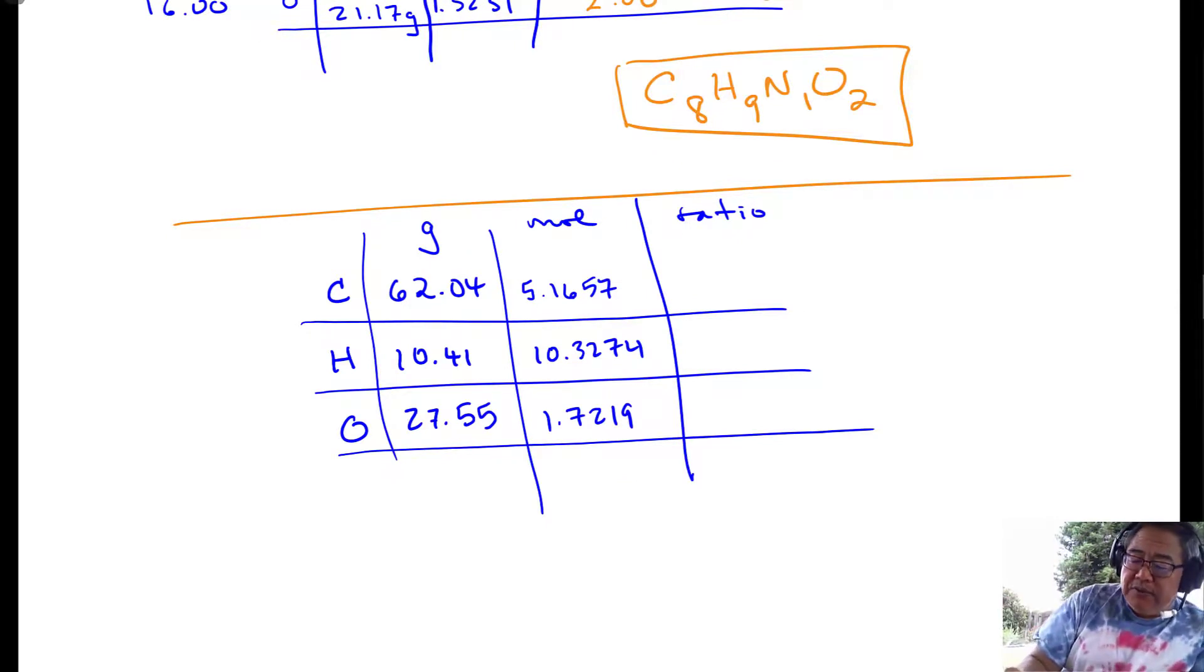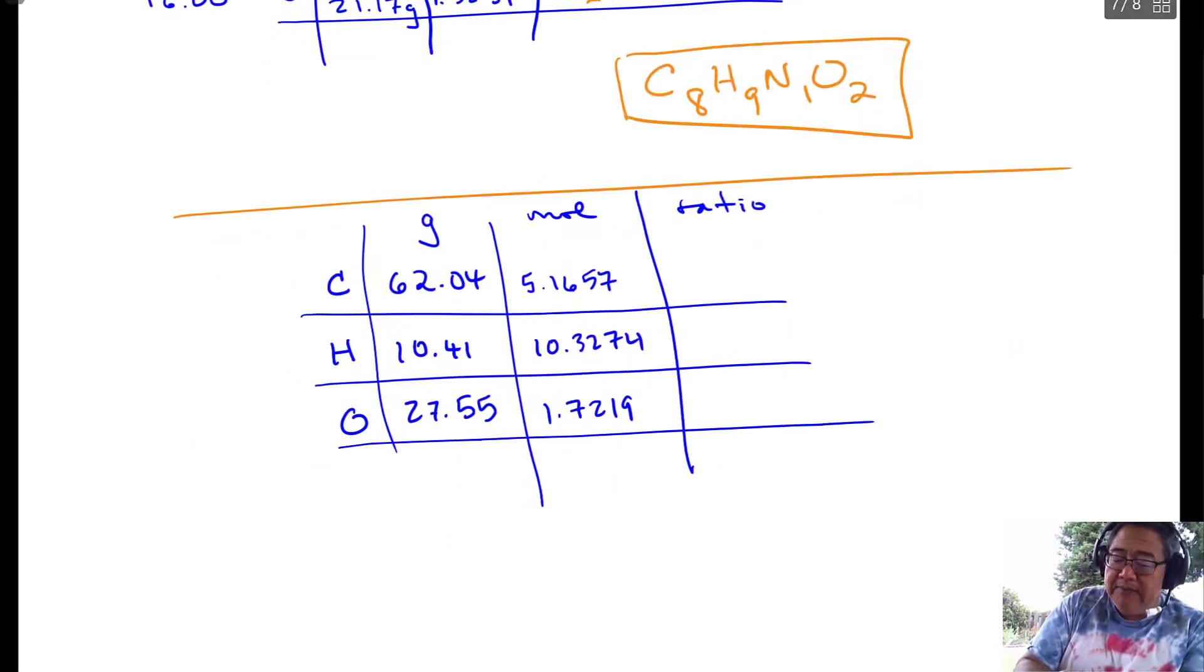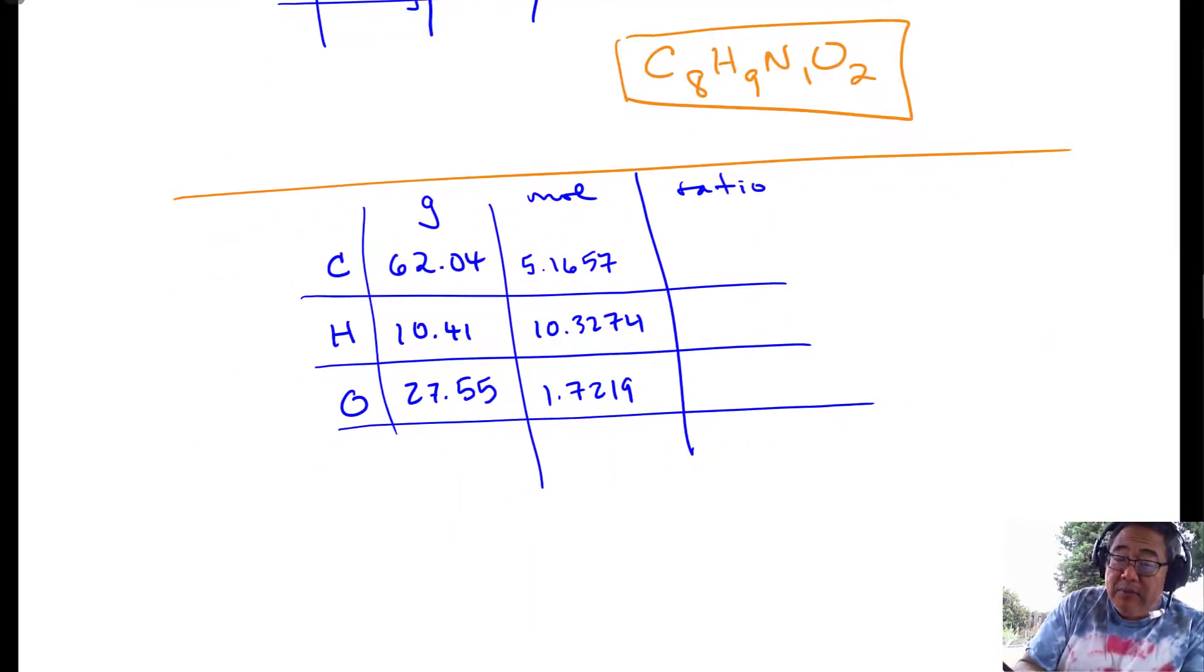Okay, so this is what your table should look like roughly. I divide by molar masses. I use the same molar masses as above. So I have my grams and I have my moles. And then I need to do the ratio. So I'm going to divide by oxygen, and I was going to talk to you a little bit about that.